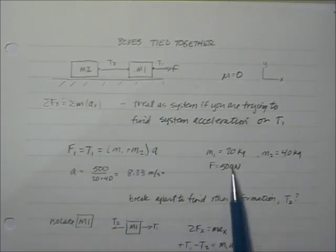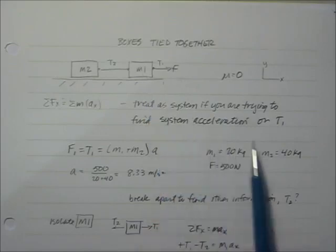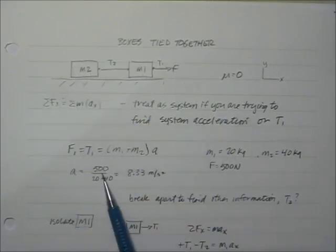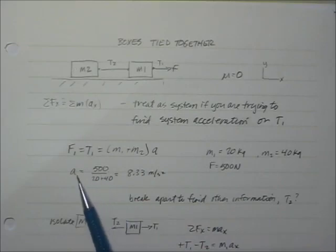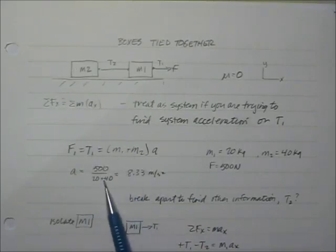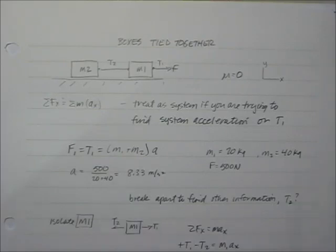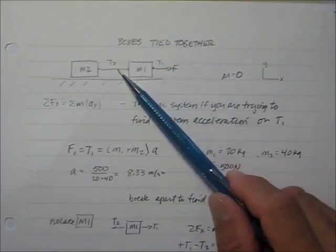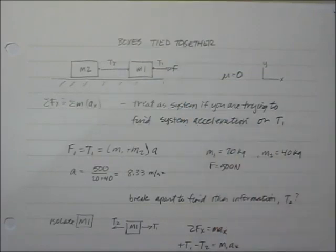Putting in numbers: mass 1 equals 20 kg, mass 2 equals 40 kg, and the force equals 500 N. The acceleration equals 500 divided by 60 kilograms, which gives 8.33 m/s². That's T1, which is the same as the applied force. The only way to find the tension in the middle — T2 — is to break the system apart.